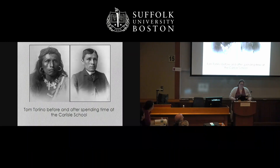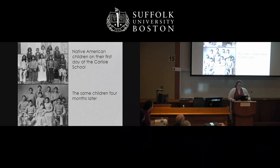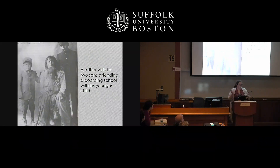Tom Torlino is one example — in his before and after photos from the Carlisle School, his hair was completely cut short and he was no longer allowed to wear any tribal clothing. Another picture contrasts boys who had been at the school with a visiting father and younger brother still in traditional dress, highlighting how completely individuality was stripped away from these children.